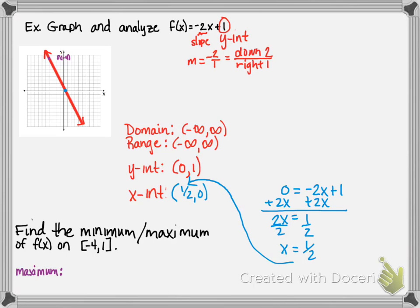So we'll substitute -4 in for x. I get -2 times -4 plus 1, which is 9. So this point is (-4, 9), and my max value is 9.